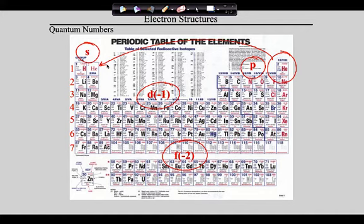Finally, label the F sublevel at the bottom — that's 14 boxes wide because there are 14 electrons in the F sublevel. Also, helium is a noble gas but it's actually full at the end of the first energy level, so write it on the left as well, indicating that helium is properly a member of the S sublevel with its two electrons. If you need additional time to fill out your periodic table, hit pause, then hit play when you're ready.